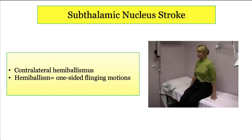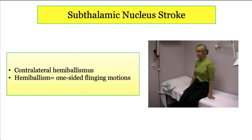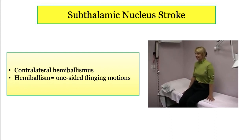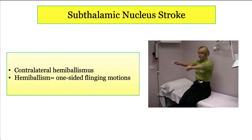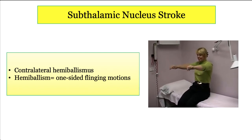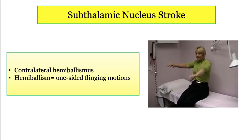Finally, if a patient presents with sudden onset hemiballismus — that is, one-sided flinging movements — the stroke is in their contralateral subthalamic nucleus, which is a part of the basal ganglia circuitry that influences control over movements. The boards love this tidbit: they'll describe sudden onset of one-sided flinging movements and ask you to localize the lesion. Simple — it's the contralateral subthalamic nucleus.